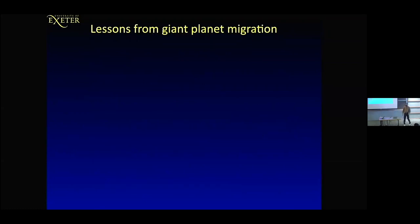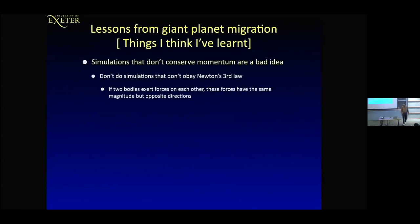This is probably going to be the most controversial bit of the talk: lessons I've learned from studying giant planet migration. Simulations that don't conserve momentum are a bad idea — this might sound obvious. Don't do simulations that don't obey Newton's third law. As Wikipedia says: if two bodies exert forces on each other, these forces have the same magnitude but opposite directions.